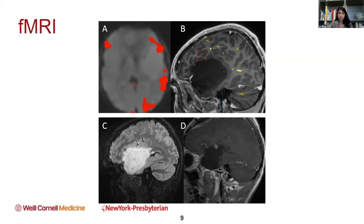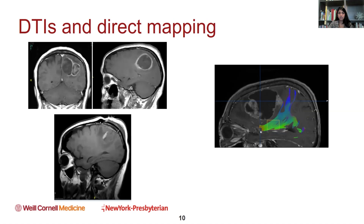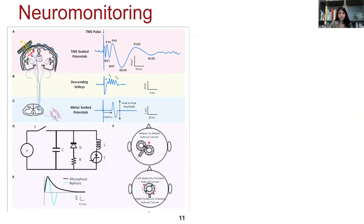We actually did the surgery with the patient awake and were able to remove all of the tumor without affecting his speech at all. That's how we use that kind of technology. This is an example of diffusion tractography — there's a tumor here, and I was tracking the motor fibers. Motor should normally be right about here, but the motor fibers were actually pushed back here, which really helps us plan an effective and safe approach to start the surgery.